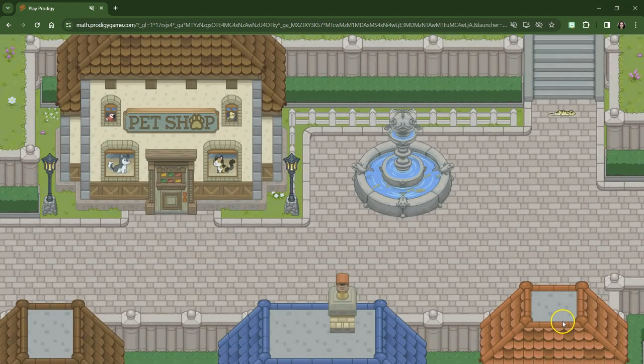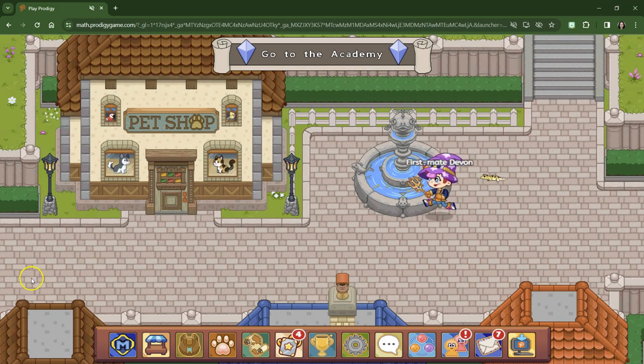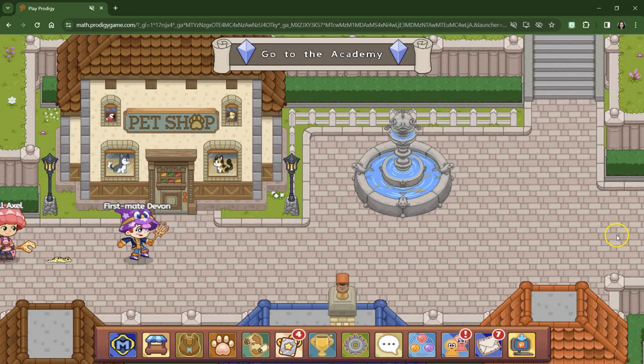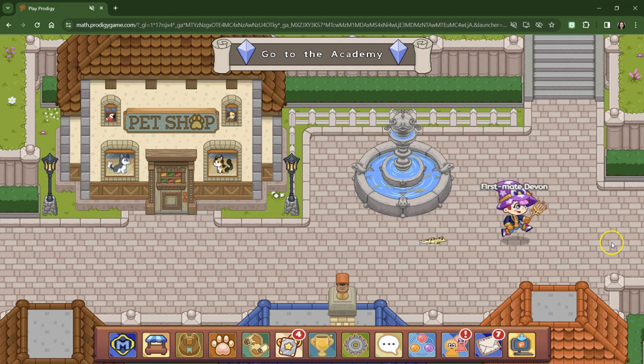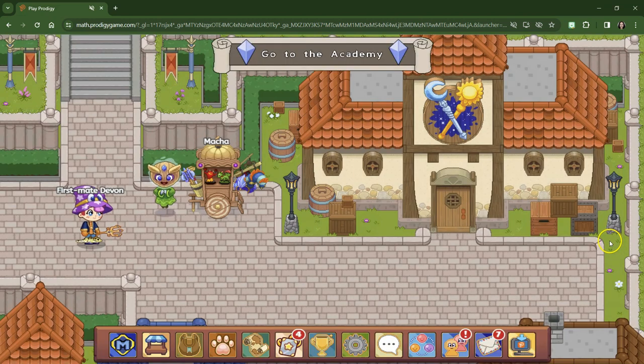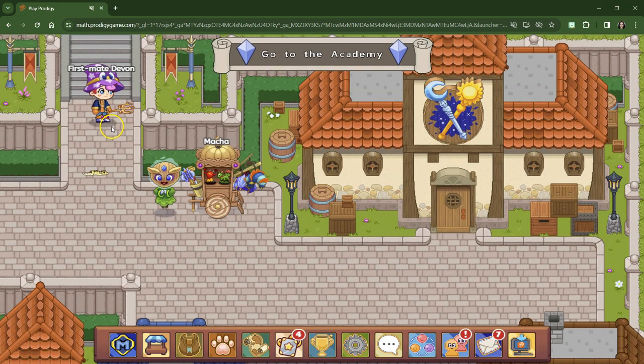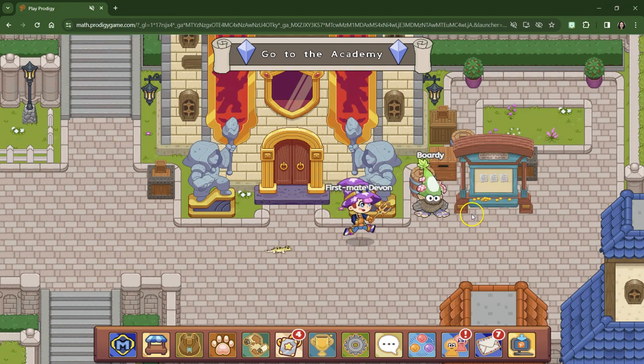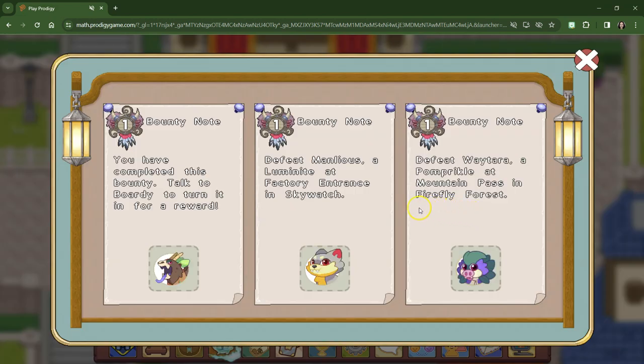I don't think I want to buy anything. There used to be a pet shop. I spent all my money already when I was leveling up. Where's the bounty board? Do they not have a bounty board anymore? I think I'll title this completely lost in Lamplight Town. So you've completed this bounty. Talk to Bordy to turn it in for a reward. Oh, we already did a bounty. Thanks for all your hard work completing the bounties. Here's your reward.